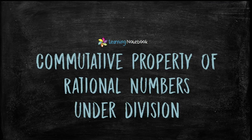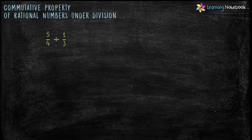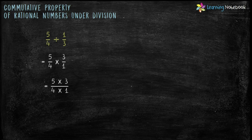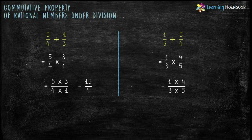Now, let's see commutative property of rational numbers under division. Let's understand it with the help of an example. Divide 5 by 4 by 1 by 3, which equals to 5 by 4 into 3 by 1. So we get 5 into 3 by 4 into 1, which equals to 15 by 4. Now, let's reverse the order and divide 1 by 3 by 5 by 4, which equals to 1 by 3 into 4 by 5. Solving, we get the answer as 4 by 15.